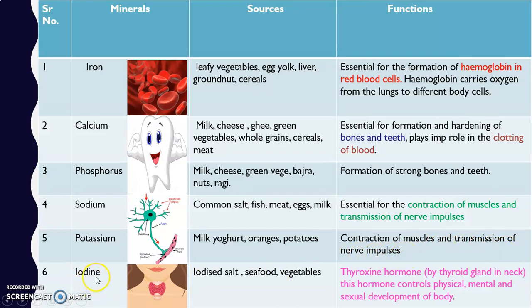Iodine is important for the thyroid gland, which is present inside our neck. Iodine is found in iodized salt, seafood like fish, and vegetables. The thyroid gland produces the thyroxine hormone, which controls the physical, mental, and sexual development of the body. We need iodine for the proper development and functioning of the thyroid gland.